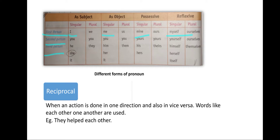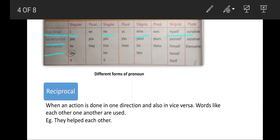For the third person, we use 'he', 'she', 'it' in singular and 'they' in plural for the subject. 'Him', 'her', 'it' are used in the object, and 'them' is used when the object is plural. In the possessive case we use 'his' or 'her', and when plural, 'theirs'. For reflexive: 'himself' for he, 'herself' for she, 'itself' for it, and 'themselves' when plural.